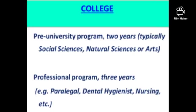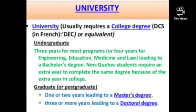At the college level in Quebec, the pre-university program is two years and covers social sciences, natural sciences, or arts. Professional programs require three years, for example paralegal, dental hygienist, or nursing. University in Quebec usually requires a college degree or equivalent. Most undergraduate programs are three years; engineering, medicine, and law require four years, all leading to a bachelor's degree. Non-Quebec students require an extra year. Graduate programs take one to two years for a master's degree, and three or more years for a doctoral degree.